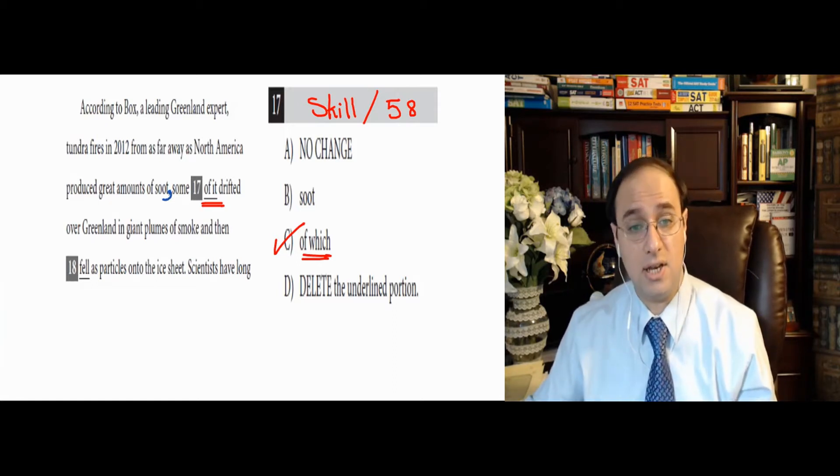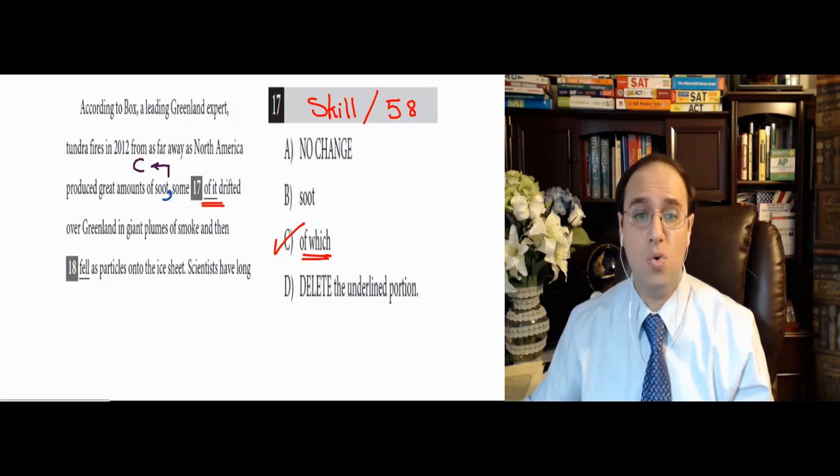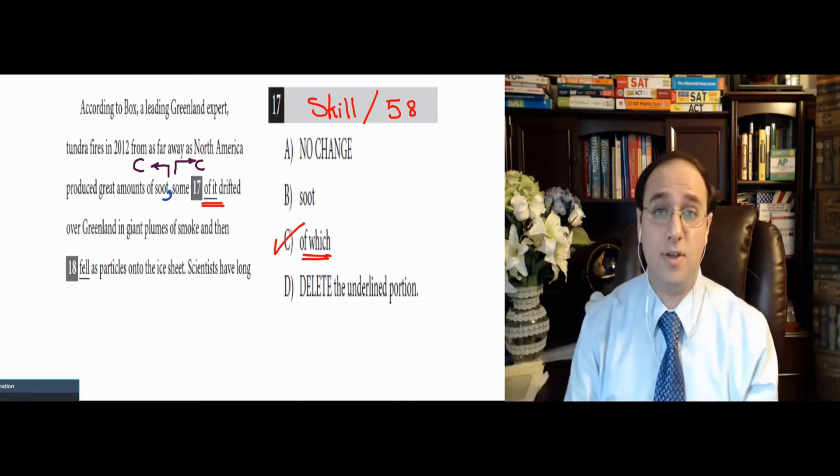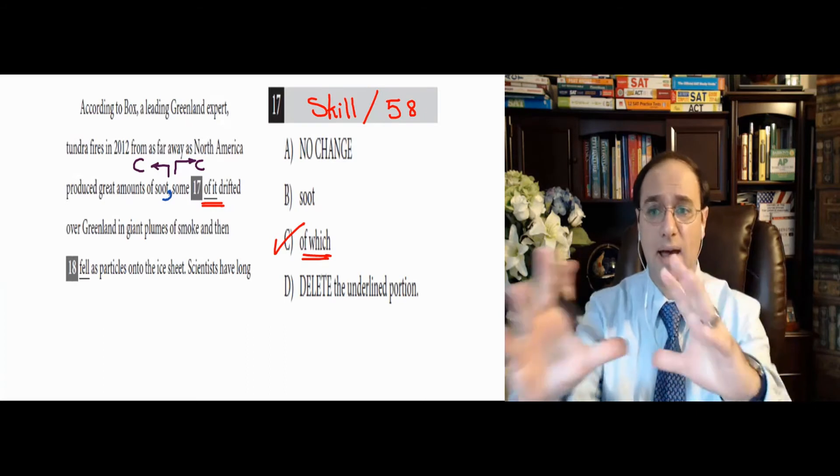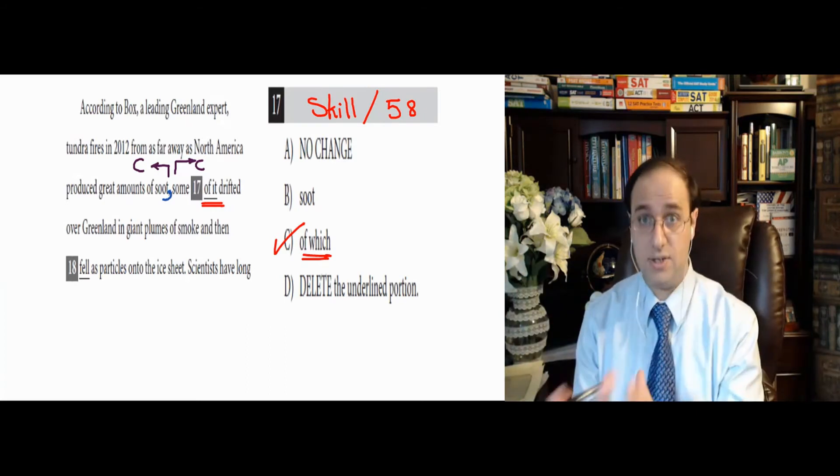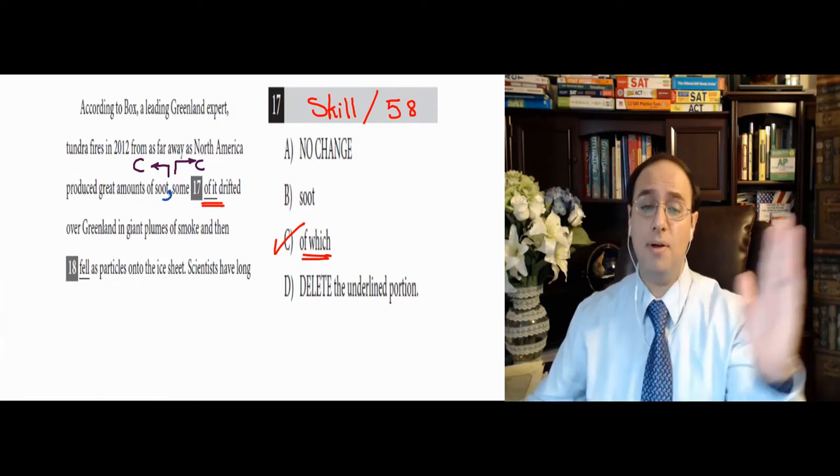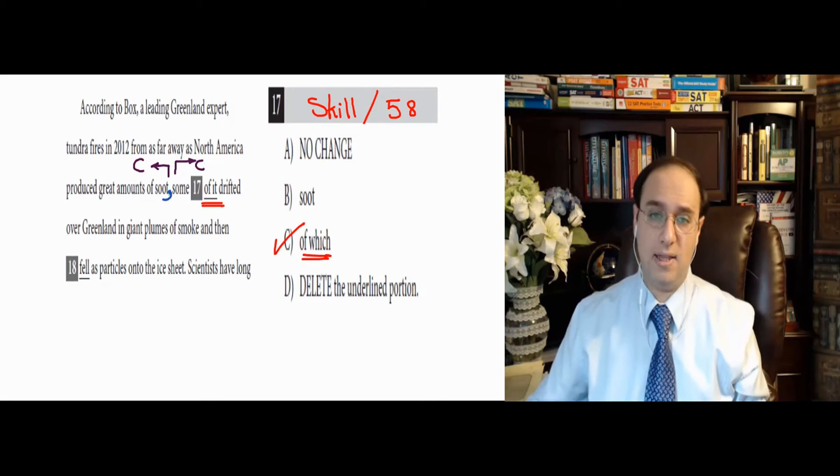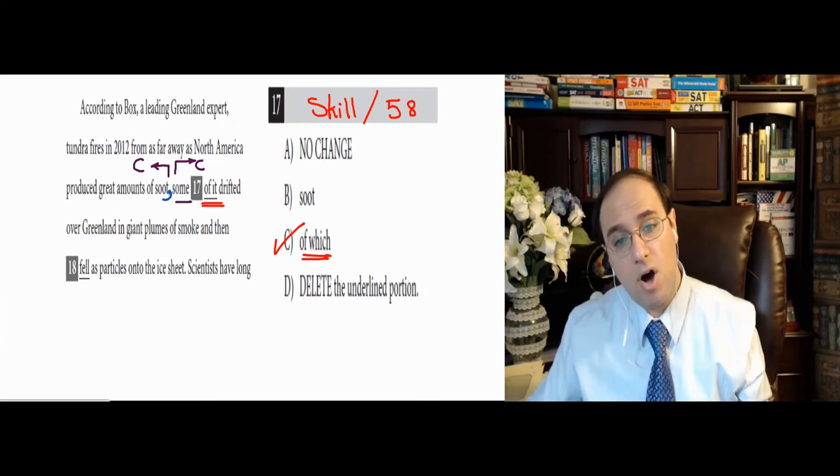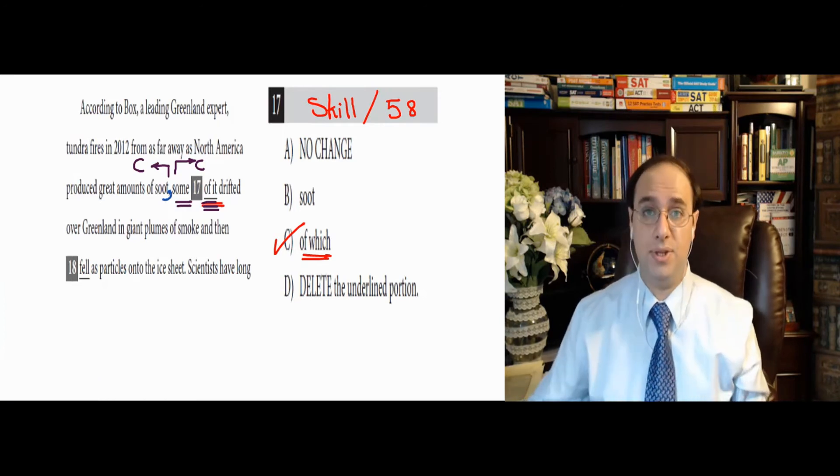It happens when the sentence before a comma is a complete sentence, and the sentence after the comma is a complete sentence. The important thing is that before the comma is a complete sentence and there's nothing to change it. When I say 'some of' noun or 'some of' pronoun, it becomes complete.